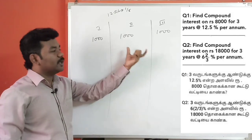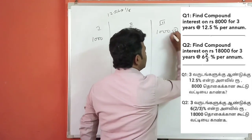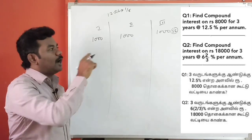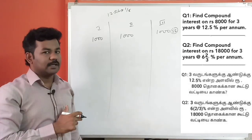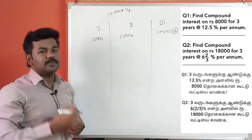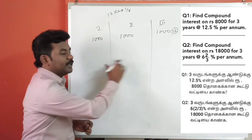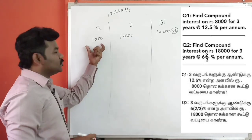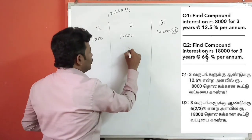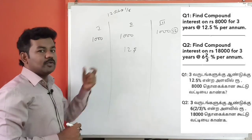Now we calculate the simple interest year by year. In the first year, the interest is 1,000. The common interest carries through each year. In the second year, we get 1 by 8 of 1,000, which gives 125.